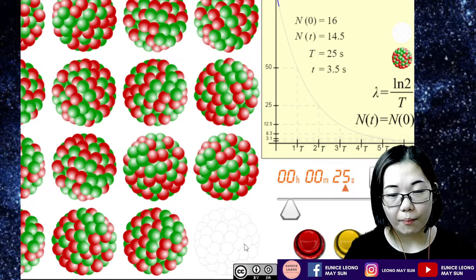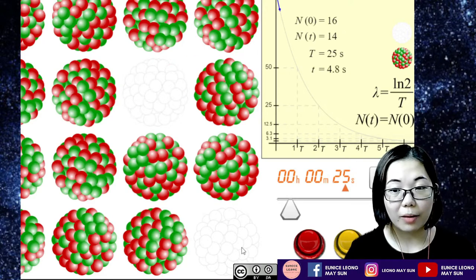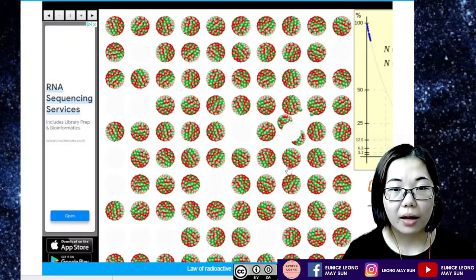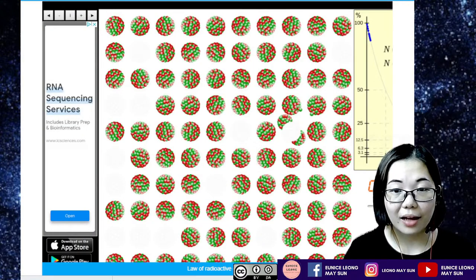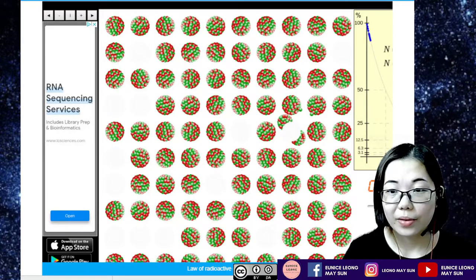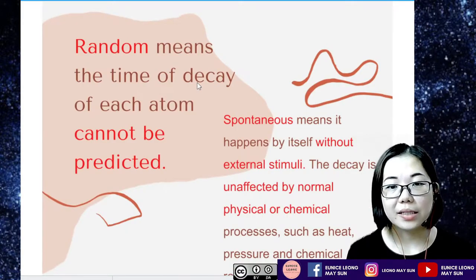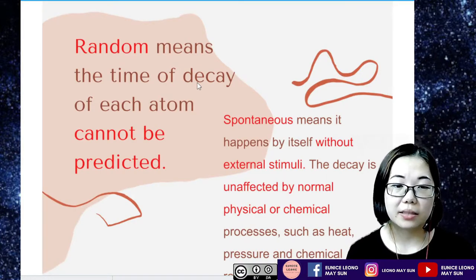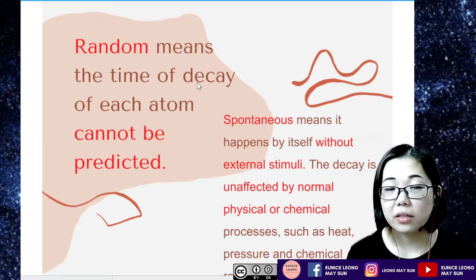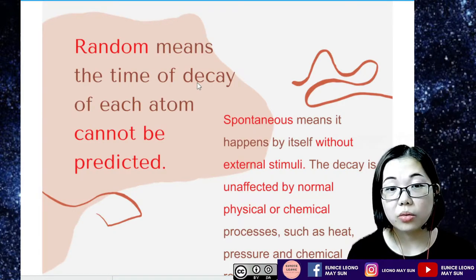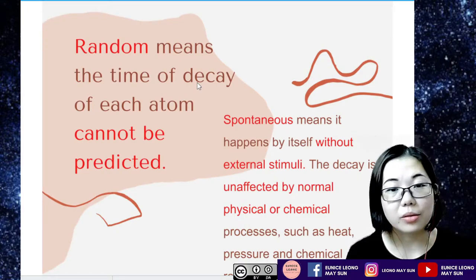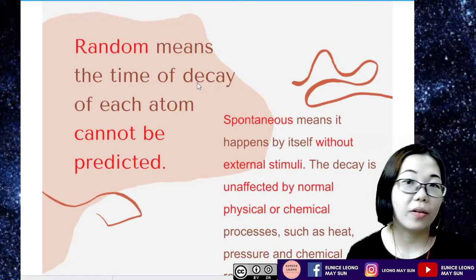If you notice, the bottom corner uranium actually disintegrated first. So this is actually what it meant by being spontaneous and also being random. Okay, so let's go to the next slide. So random actually means the time of decay of each atom cannot be predicted. Which uranium atom will decay first? We have no idea. Will it take two minutes or two seconds for the radioactive elements to actually decay? Unknown. So it's unpredictable, therefore it is random.